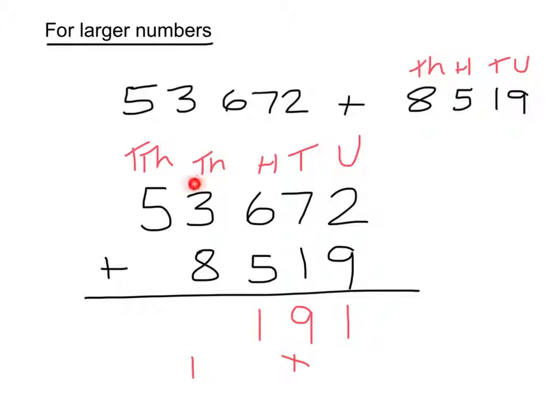In the next column, I would get 3 add 8 and this one here which gives me an answer of 12. So, writing down the 2 units and carrying the 10.